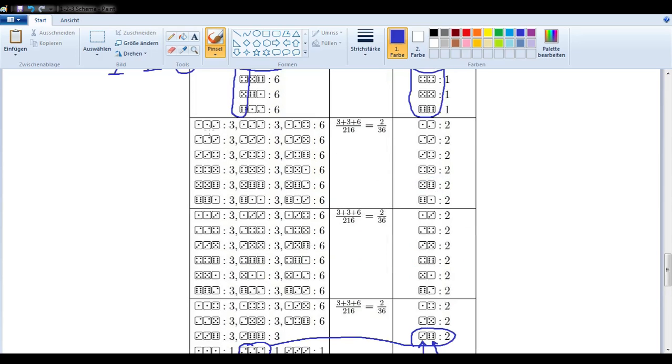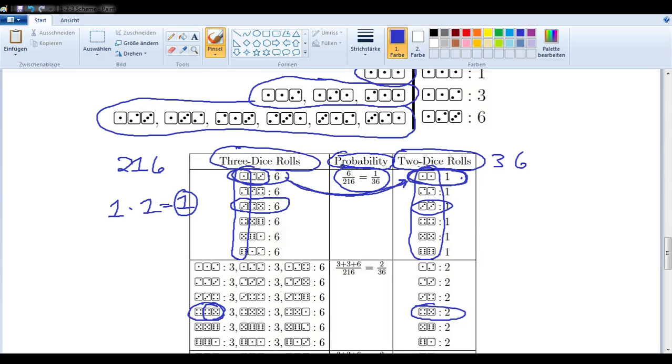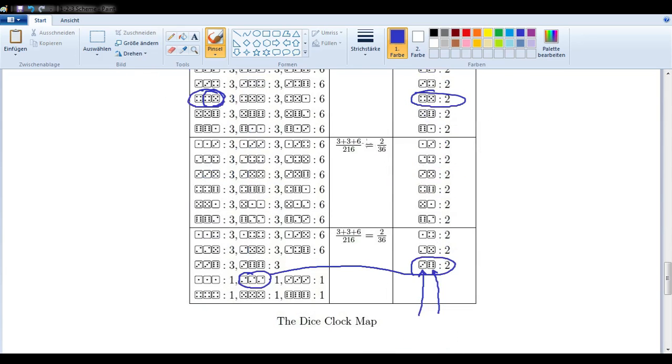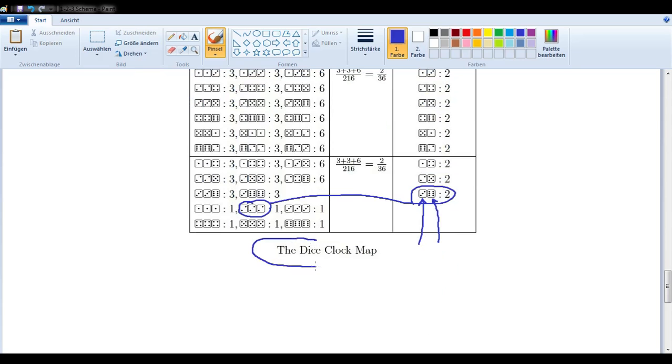How about another example? What about 4,4,5? Well we only have two unique values, four and a five, so we'll use those, four and a five. So that is the way that the 1-2-3 scheme expresses this map here, which I'm calling the dice clock map.